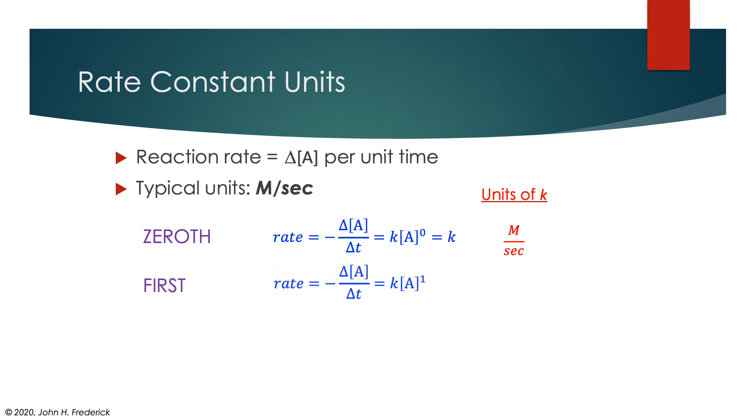In the case of a first order rate law, this would be our differential rate law. It would be the negative of the change in concentration with respect to time equals k times the concentration. So since the concentration carries with it units of molarity, we've already got the molarity, so the k would have to be in units of 1 per second, or inverse seconds.